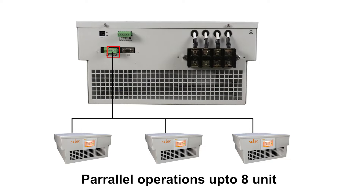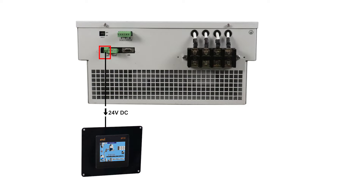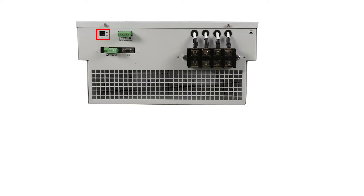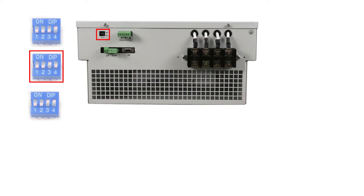Communication amongst modules happens through this RS485 connector. 24 volt is for the HMI — the HMI requires 24 volt which is connected from here. This is the D switch setting for setting the slave ID of this module. Suppose there are 3 such modules connected: you will set the first module in binary as 0001, the second as 0010, and the third as 0011.